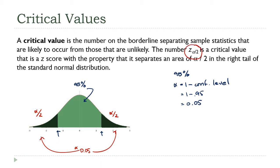That's where the notation z-alpha-over-two for the critical value comes from. The critical value z-alpha-over-two is the z-score that — referring to the left-hand one — has alpha over two of the area to the left of it. On the right-hand side, it's the critical value that has alpha over two of the area to the right. To clarify: the lower critical value has alpha over two to the left, and the upper critical value has alpha over two of the area to the right.